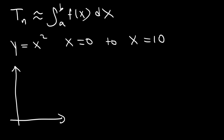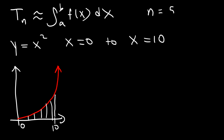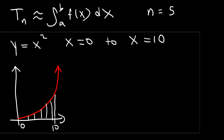So let's graph this function. This is the right side of y equals x squared, and we want to calculate or estimate the area of the shaded region. We'll use five sub-intervals or five rectangles to do so, and then we can confirm how close our estimation is using the exact value of the definite integral.